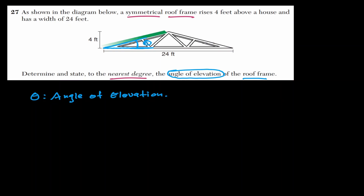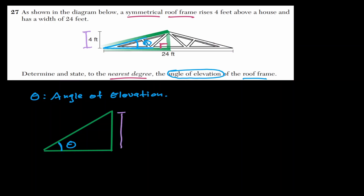When we consider this angle of elevation reaching the top, we can create a perpendicular line at the bottom that meets the other section of the angle of elevation. Now we can work with this right triangle. The height is four feet, and we have a right angle at the bottom.